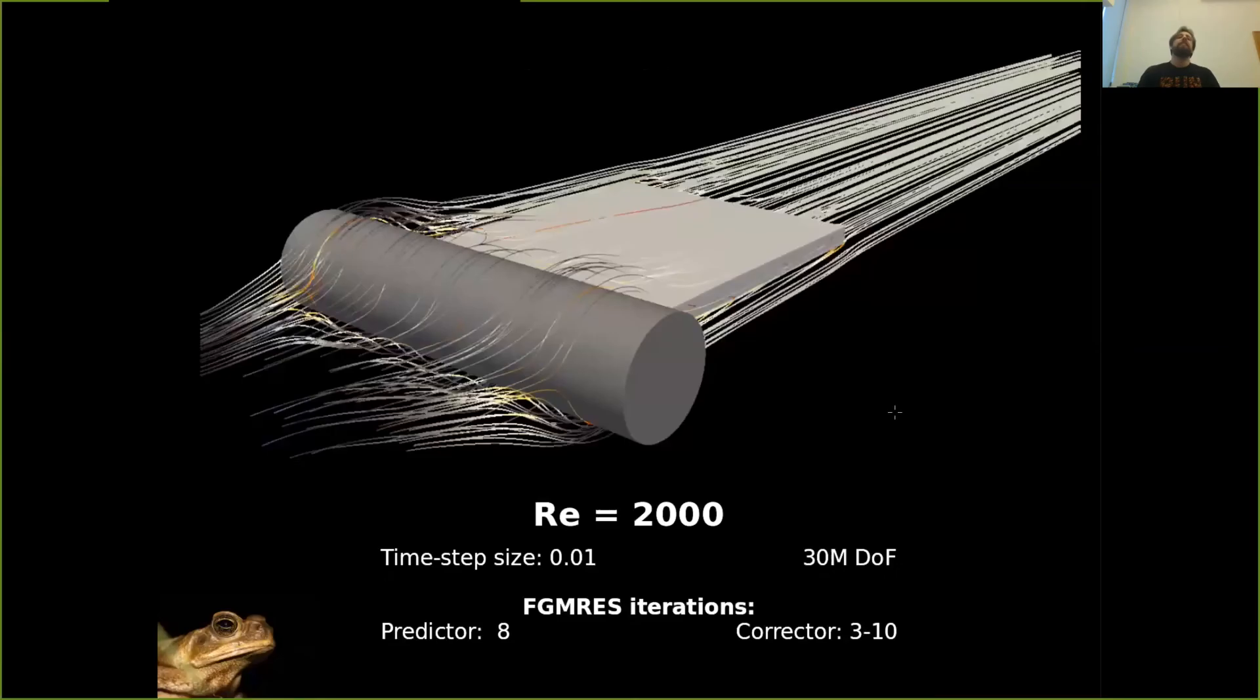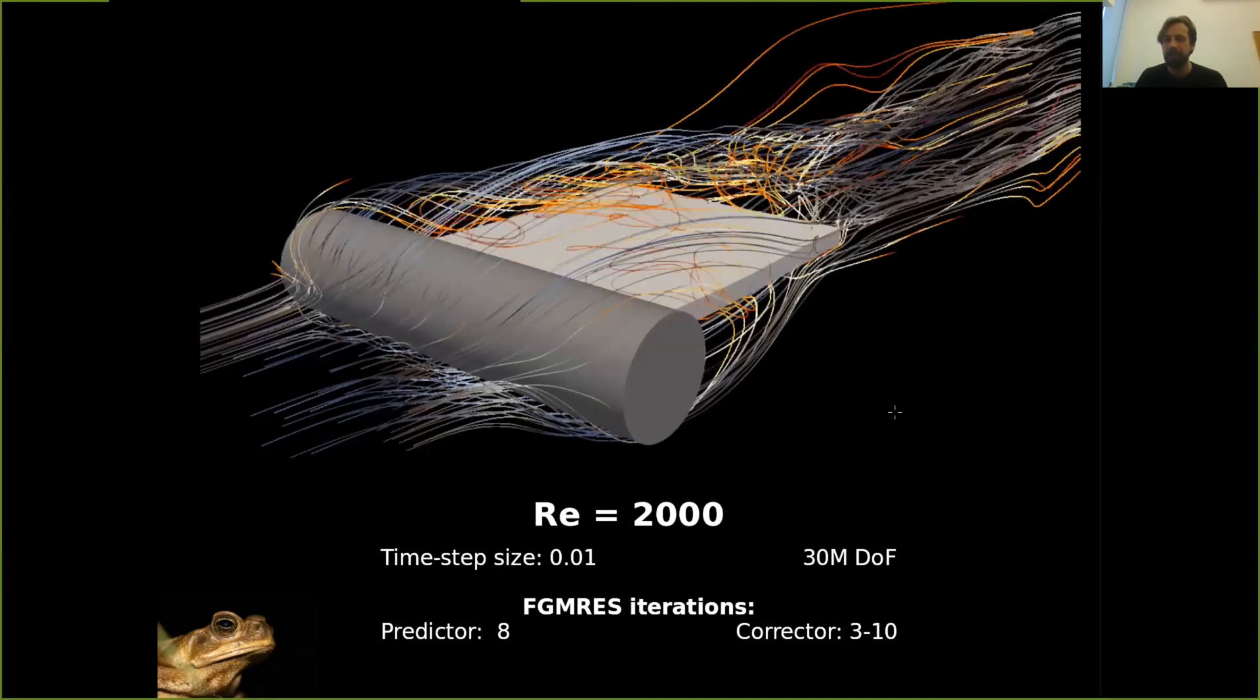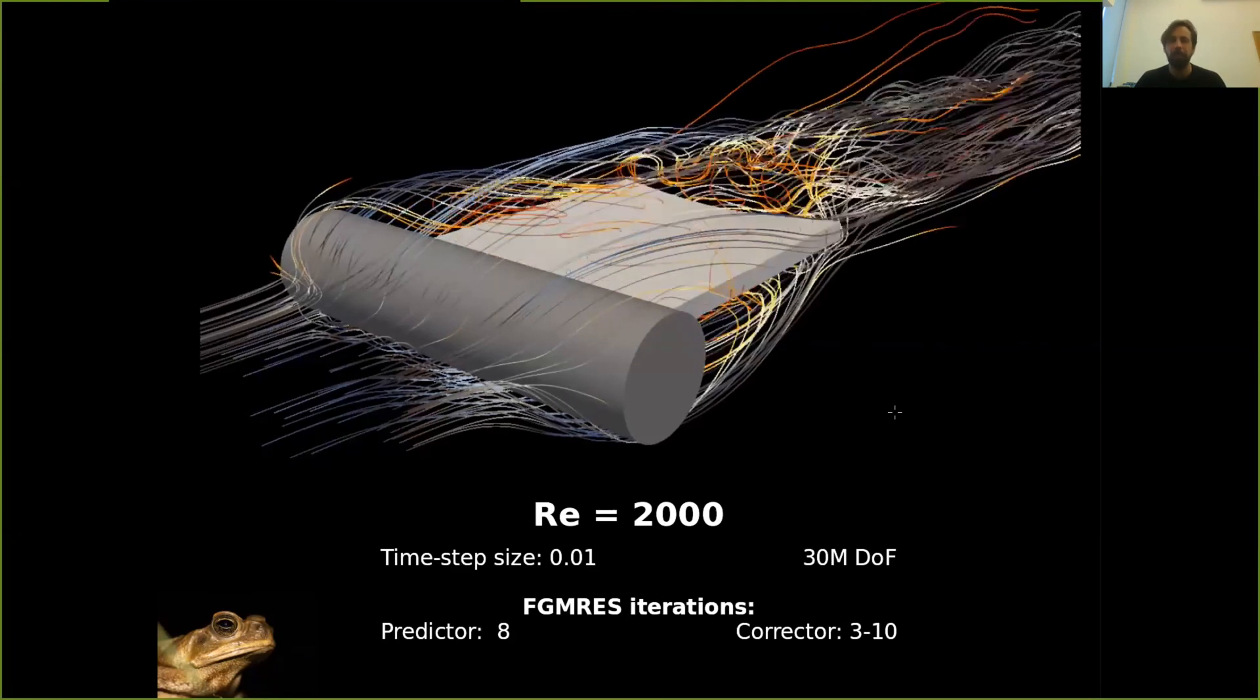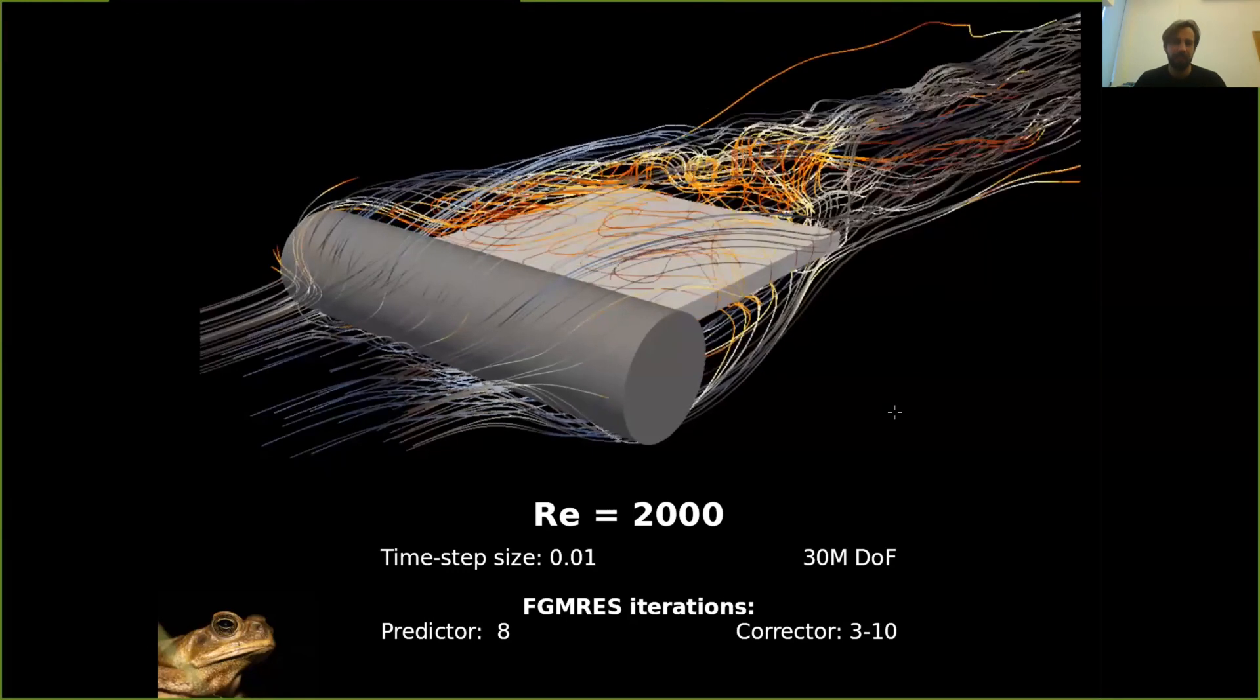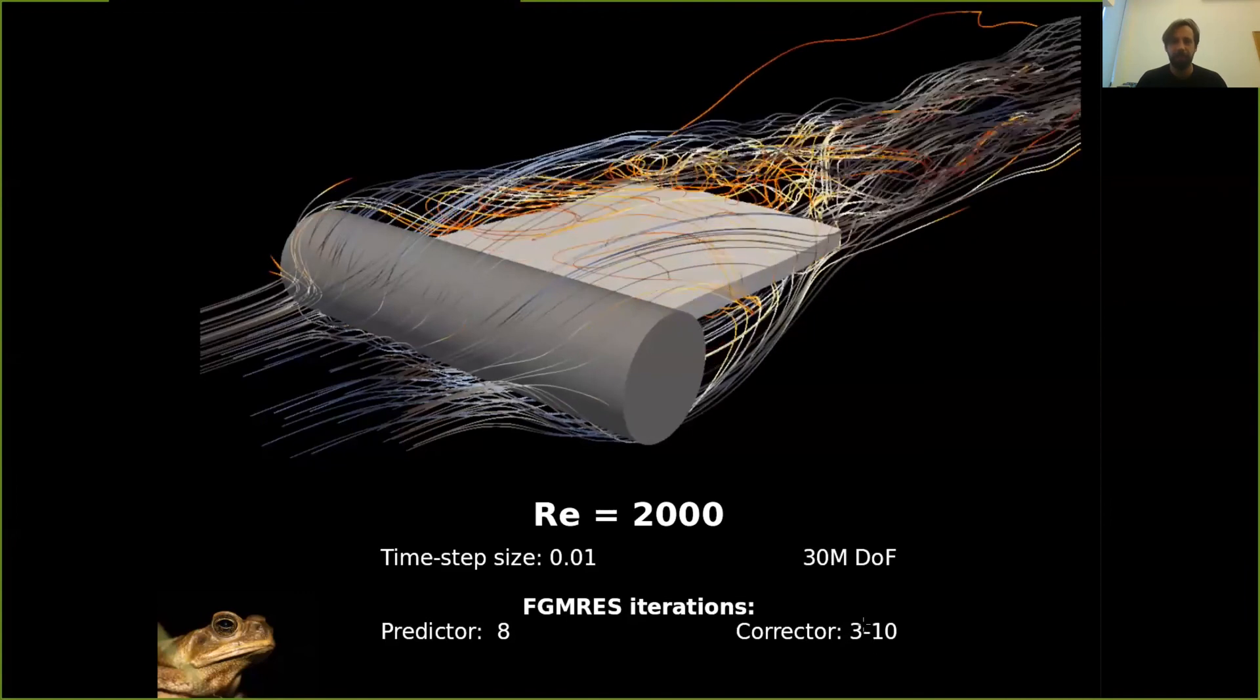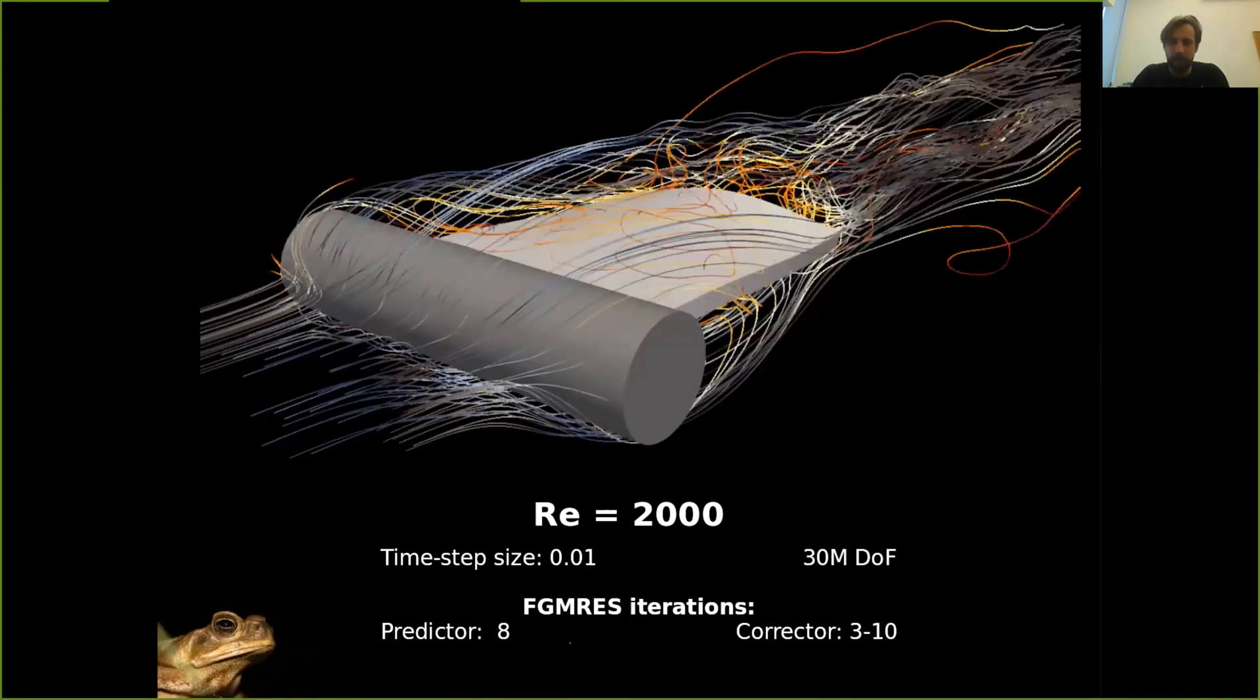So finally the Turek benchmark, kind of Turek benchmark 3D. The Reynolds number was 2000. And somehow it is significantly more stable because the timestep size was one one-hundredth of a second. The problem size was 40 million degrees of freedom. And the solver performance is surprisingly good because it converges in sometimes even three iterations depending on the configuration. And predictor is pretty much constant. It's around eight iterations per timestep.